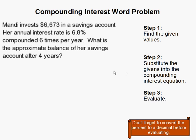Compounding Interest Word Problem. So the first thing I'll do is read the problem to you. Mandy invests $6,673 in a savings account. Her annual interest rate is 6.8%, compounded 6 times per year. What is the approximate balance of her savings account after 4 years?